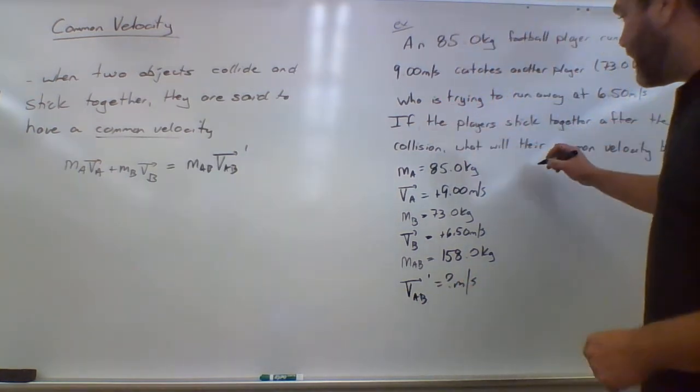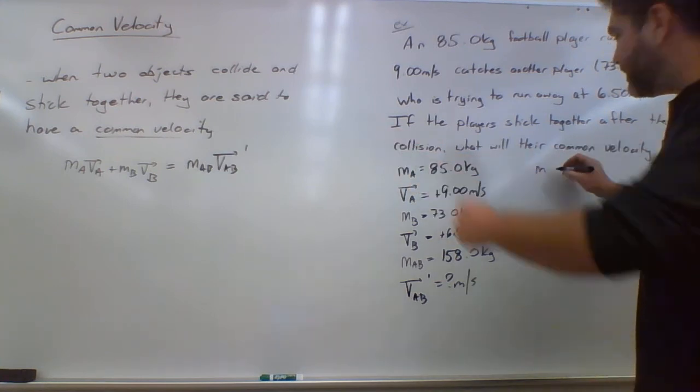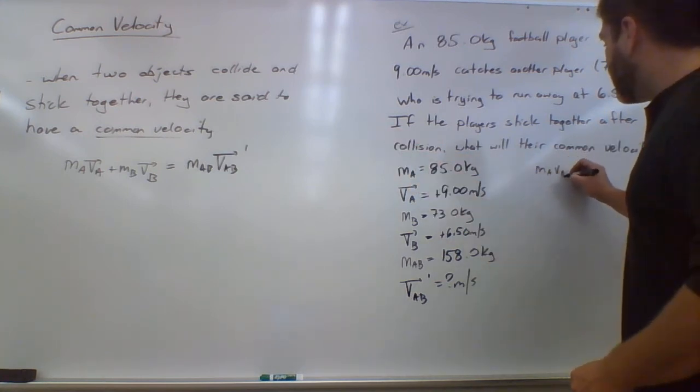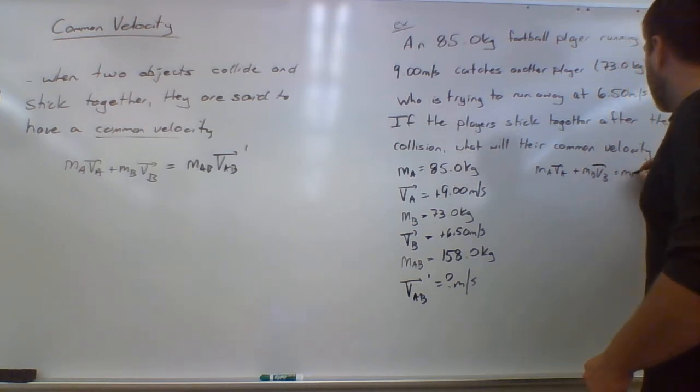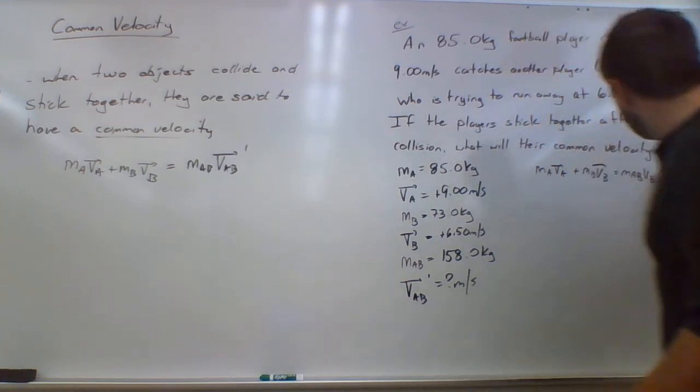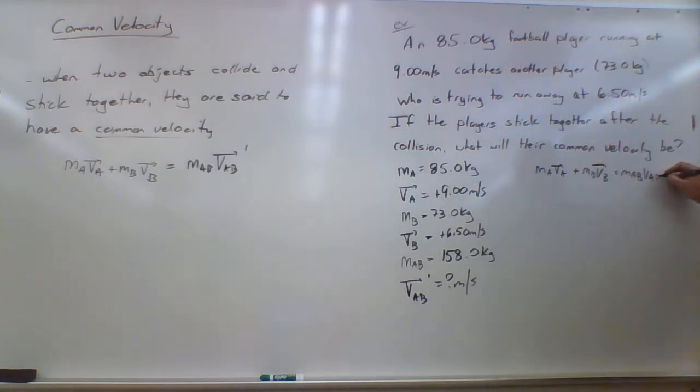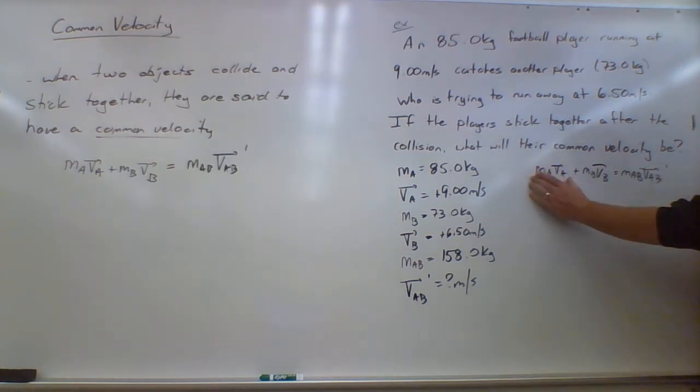So I set my equation like I had here on the left-hand side: MA VA plus MB VB equals MAB VAB prime. So football player A, football player B, the two of them combined.